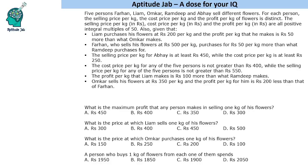Welcome to Aptitude Jab. This is a caselet. There are 5 persons: Farhan, Liam, Omkar, Ramdeep, and Abhay. They sell different flowers, and for each person the selling price per kg, the cost price per kg, and the profit per kg is distinct. These values are all positive integral multiples of rupees 50. We need to find the selling price, cost price, and profit for all five people.